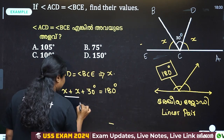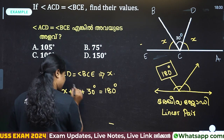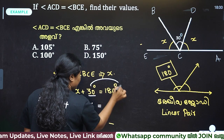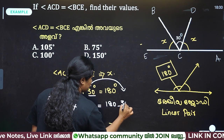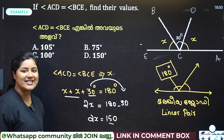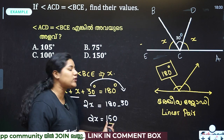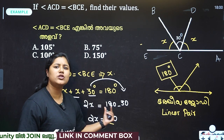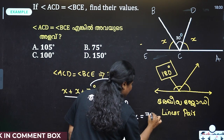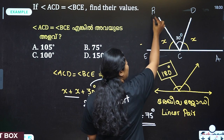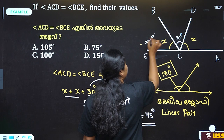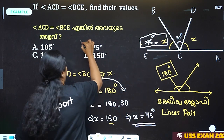We add 2x. So 2x is equal to 180 minus 30, that is 150. 2x equals 150. That means x equals 75 degrees. Therefore, BCE and ACD are both 75 degrees. This is the concept of this — option B. If we use this concept, it is 180 degrees for the linear pair.